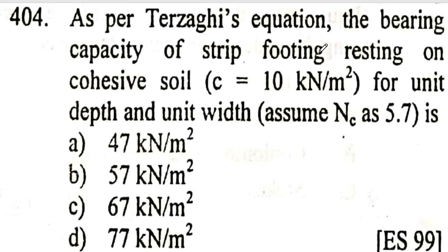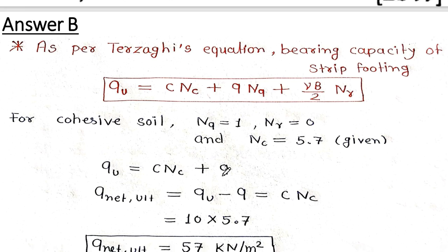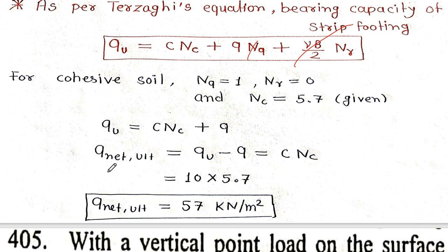Next question: using Terzaghi's equation, find the bearing capacity of a strip footing resting on cohesive soil for unit depth and unit width. The formula is q = c·Nc + q·Nq + 0.5·γ·B·Nγ. For cohesive soil, Nq equals 1, Nγ equals 0, and Nc equals 5.7 as given. Since Nγ is 0 and Nq is 1, the third term vanishes.